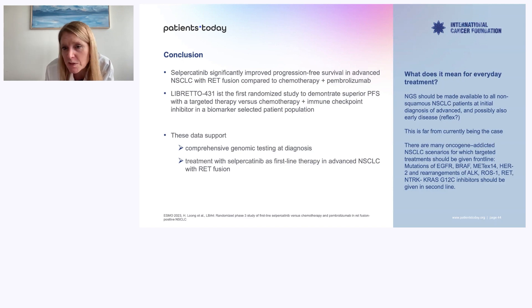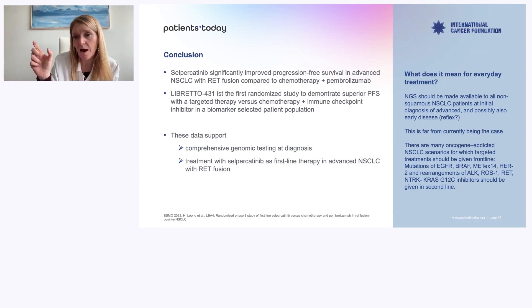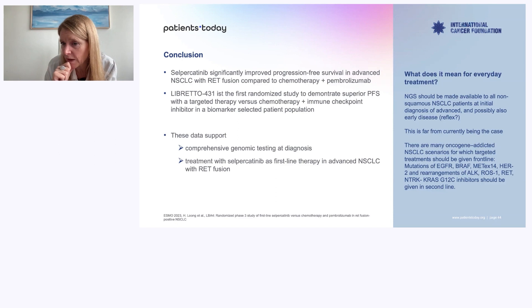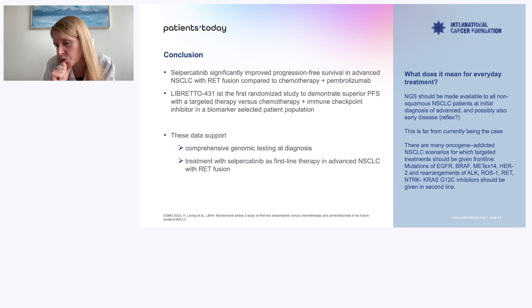The bottleneck is testing. Finding a RET fusion needs a difficult test — you need to look at the RNA, the expression of the gene, which requires a very refined test not available everywhere. Large-scale testing is not available widely, and this specific test for RET even less so. The main problem is not only accessibility to treatment but accessibility to testing. We may be missing half or three out of four of these positive cases in Europe.